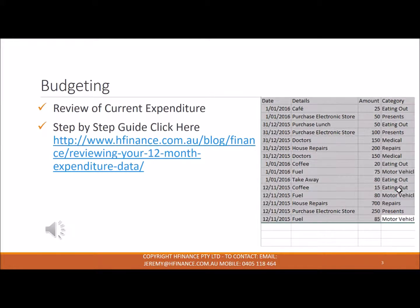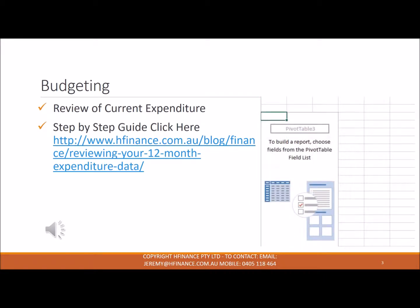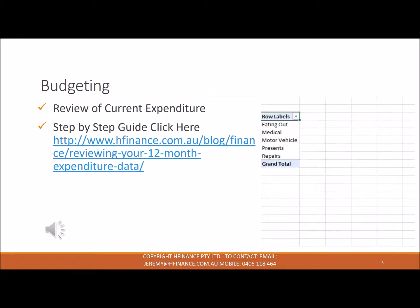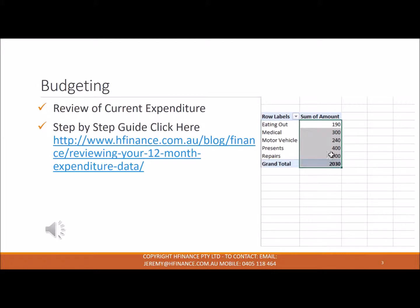Now I'm going to pivot this data, picking by category and then by amount. We can see here what we've spent our money on for the last three months, and this gives us a reference point for when we go ahead and do the budget.